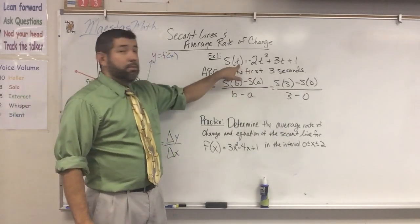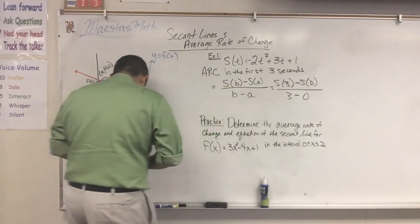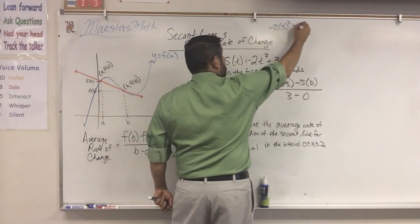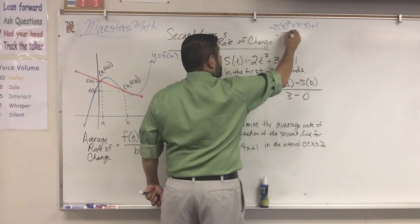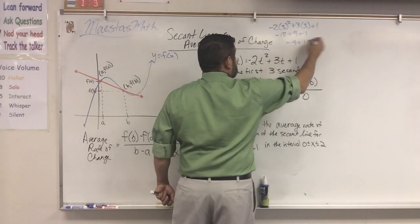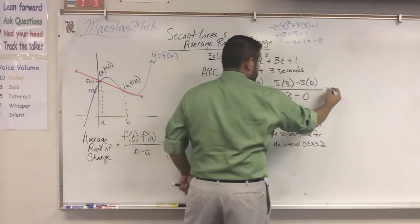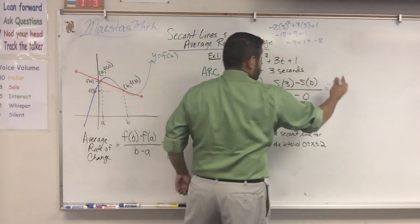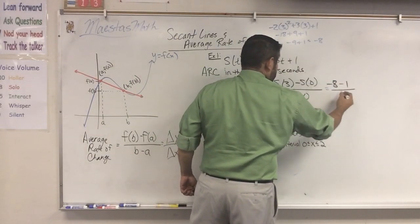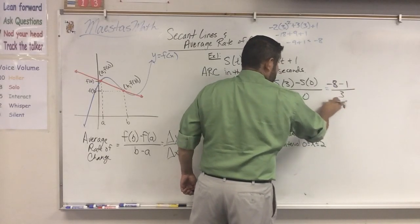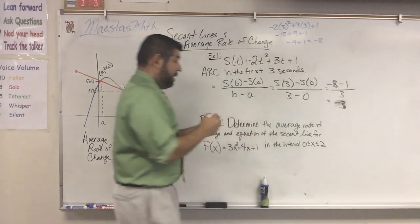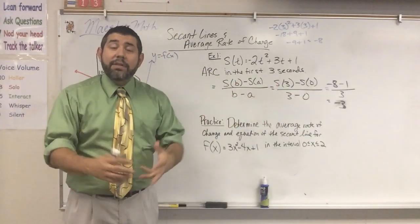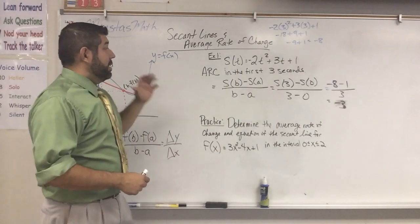Now we're going to plug these values into our function. Plugging in three: negative two times three squared plus three times three plus one gives us negative 18 plus 9 plus 1, which is negative eight. Plugging in zero gives us one. So we have negative eight minus one over three, which is negative nine over three. The average rate of change — the average velocity — is negative three.